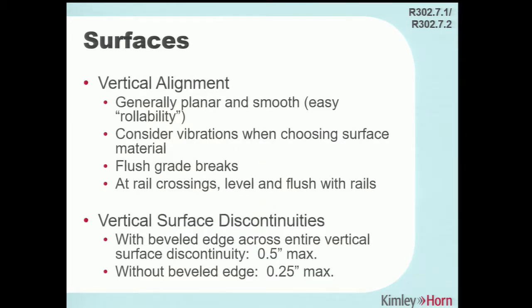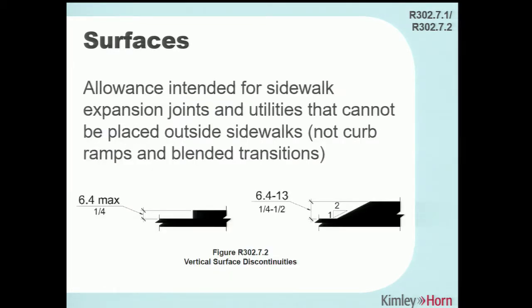Vertical alignment should be generally planar and smooth for easy rollability. Brick pavers, for example, can be a rough ride for wheelchair or walker users if there are slight vertical discontinuities between pavers. When using brick pavers, make sure you have a good base and a maintenance program to prevent vertical discontinuities. The maximum vertical elevation change is a quarter inch. There is an allowance for a half inch, but only with a perfect bevel — more applicable to prefabricated materials like detectable warning surface plates.